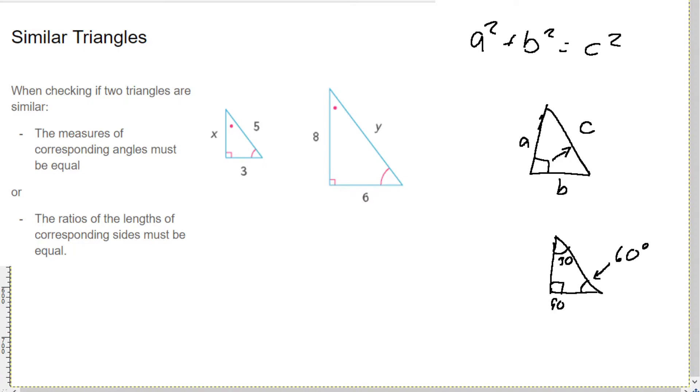So when checking if two triangles are similar, we're going to need kind of two pieces, or one of two pieces, of information. The first one is that the measures of corresponding angles must be equal. So if all the angles are the same in two triangles, then the triangles are going to be similar. They have to be. And the other one is if all of the sides are the same, then you know that the triangles have to be similar triangles.